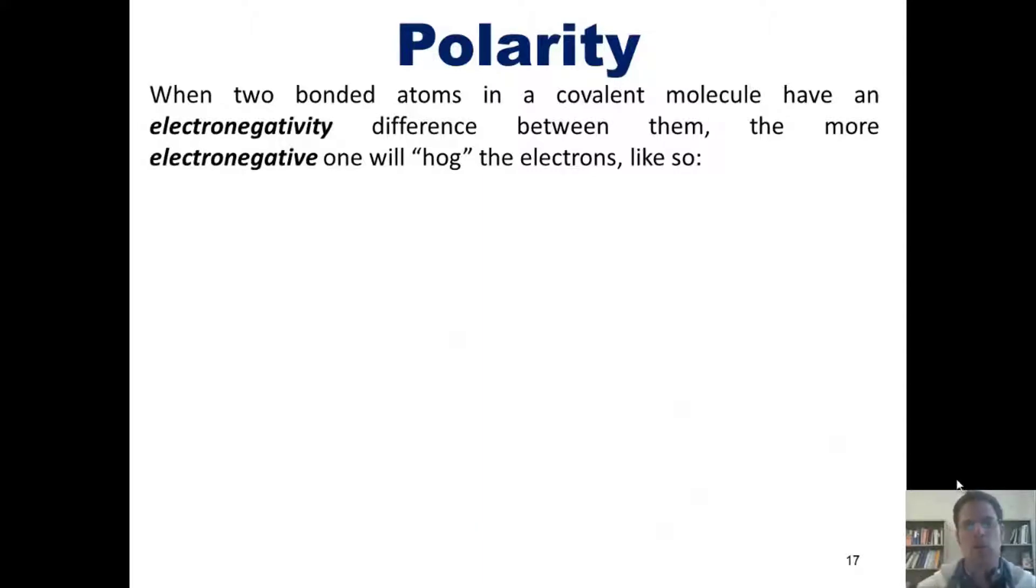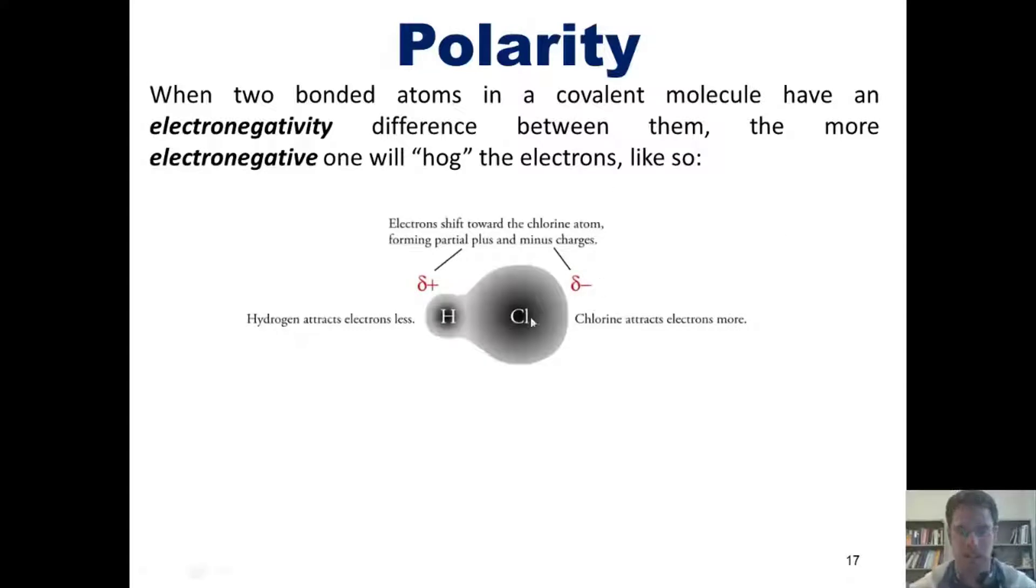When two bonded atoms in a covalent molecule, that is a molecule in which there is a sharing of electrons, have an electronegativity difference between them, the more electronegative one will hog the electrons to itself like this. In this example, hydrogen chloride or hydrochloric acid, both of these elements are nonmetals.